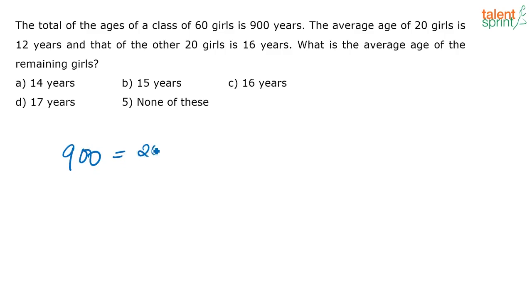Average of 20 girls is 12. So what is the sum of ages of the 20 girls? 20 into 12. Next, average of the other 20 girls is 16. So 20 into 16. That is the sum of the ages of the next 20 girls. So you have 20 more girls whose average we don't know is how much. Find out the value of x.